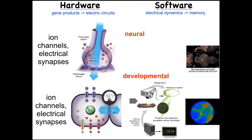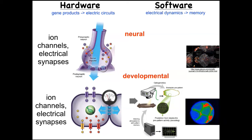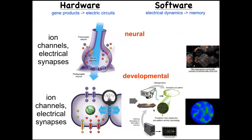Evolution discovered the utility of electrical networks very early — not something nerves or brains invented; it's as old as the first bacterial biofilms. Every cell in your body has ion channels; most have electrical synapses known as gap junctions. We embarked on a path parallel to neuroscience: importing practical tools like optogenetics, drugs hitting neurotransmitter pathways, and conceptual tools from behavioral science, active inference, and so on — because the tools do not distinguish between neural and non-neural tissue.